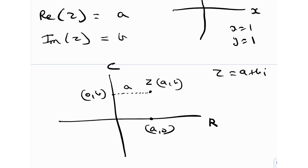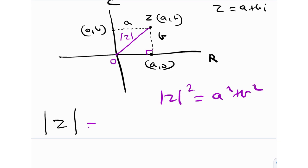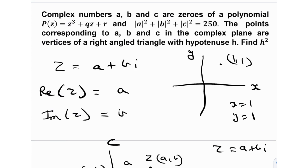Notice this quantity called the modulus of a complex number, written as |z|. The modulus of z is the distance from the origin to the complex number z. From the Pythagorean theorem, since the angle is 90 degrees, |z|² = a² + b², so the modulus is the square root of a² + b². In general, for any complex number z = a + bi, the modulus is √(a² + b²).